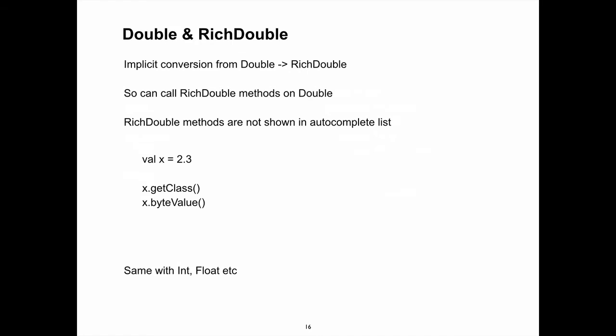One example is the RichDouble class — there's an implicit conversion between Double and RichDouble. So when looking for methods on Double, RichDouble has extra methods. We also get type inference: all data types are typed, but the compiler can infer them. When I assign a string to a variable, the compiler is smart enough to say, 'oh, that's a string.'